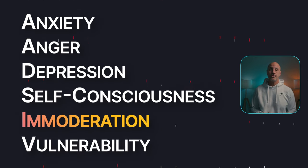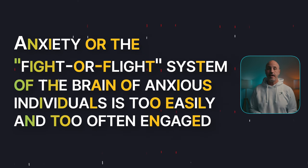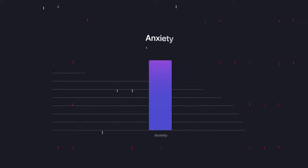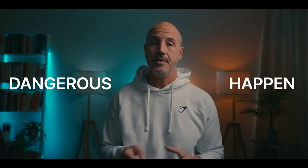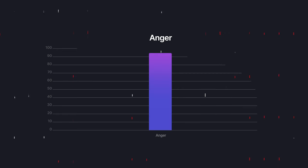The fight-or-flight system of the brain in anxious individuals is too easily and too often engaged. People who are high in anxiety often feel like something dangerous is about to happen — they might be afraid of a specific situation or be generally fearful. They feel tense, jittery, and nervous. Persons low in anxiety are generally calm and fearless.